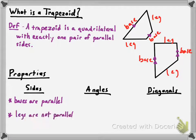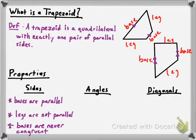I'll throw in one more little fact here: the bases are never congruent. It is possible for the legs to be congruent, but you'll never see bases congruent to one another. If the bases were congruent, then you would end up with a parallelogram, not a trapezoid.